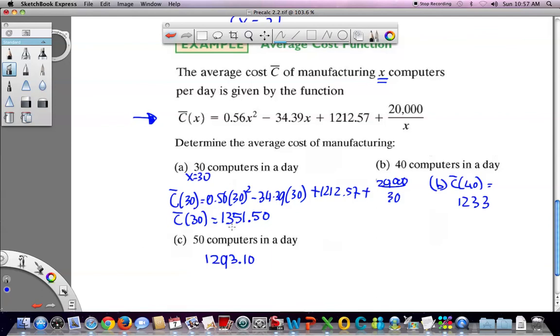I don't know if you look at the pattern. At 30, it's basically $1,350 and a little bit more. And at 40, it's $1,233. And then here, it went back up. So it looks like this might be a low point, or at least close to a low point. All right. Thank you.